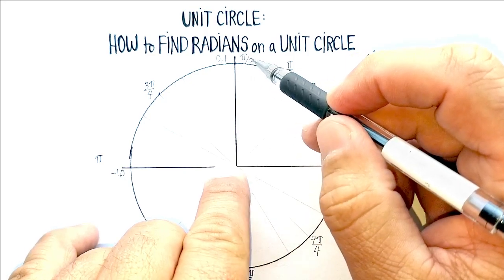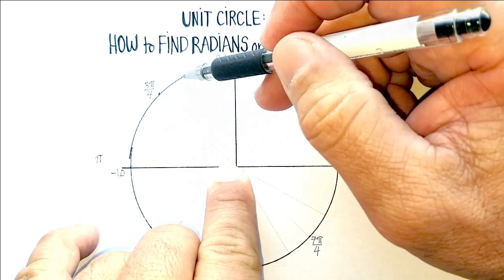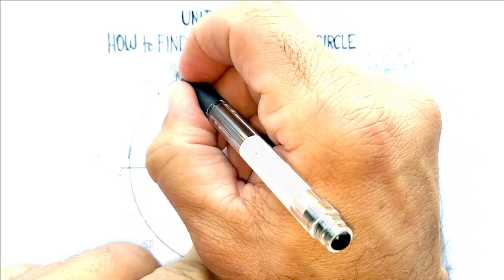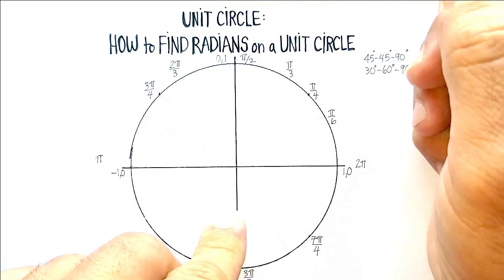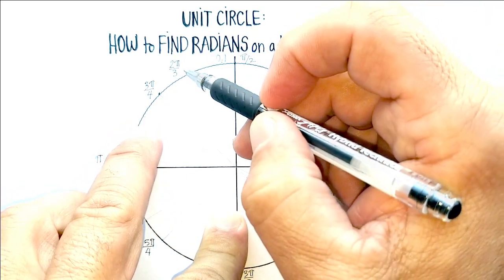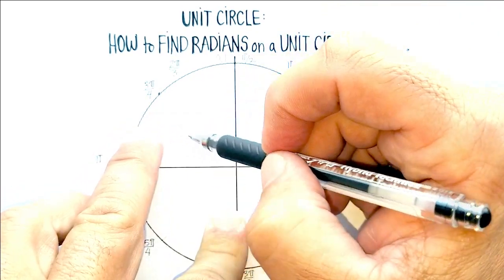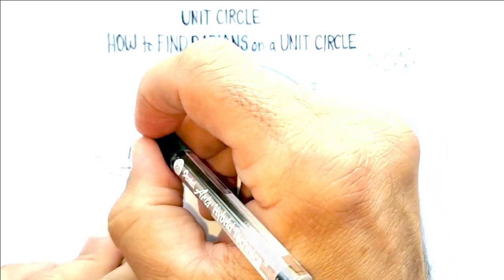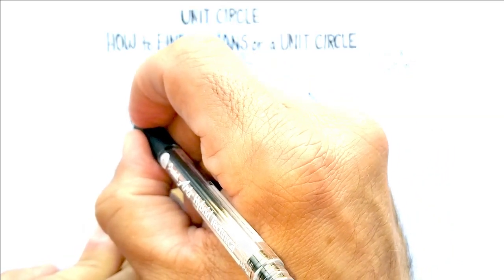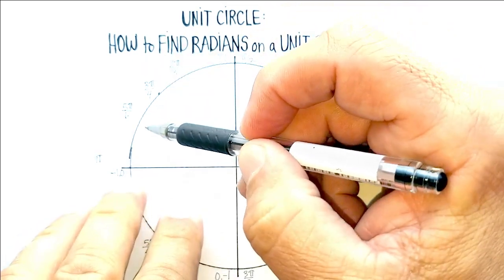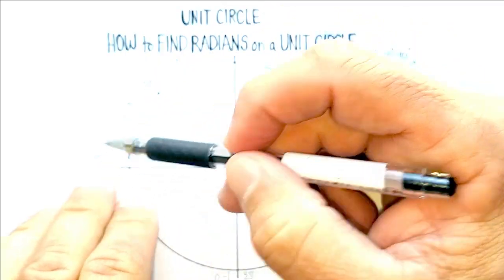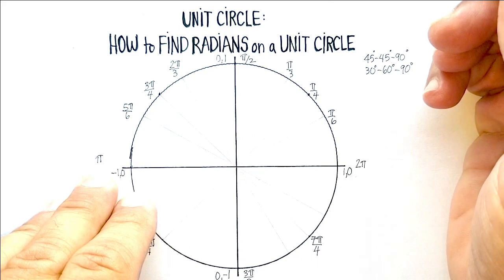Four over six reduces to two pi over three. Five over six, we're going to add another sixth. It doesn't reduce to anything, so we'll say five pi over six. And then finally, six over six pi gives us one whole pi. And let's keep on adding the rest.